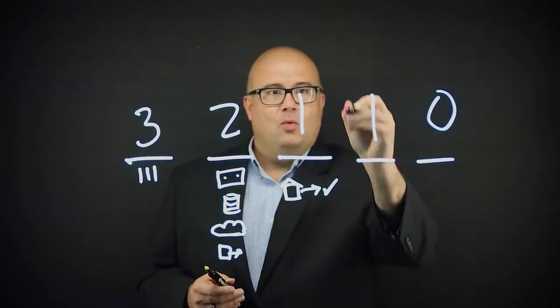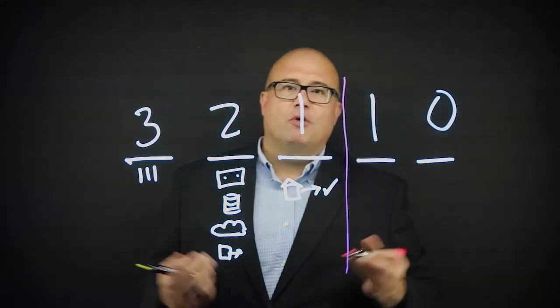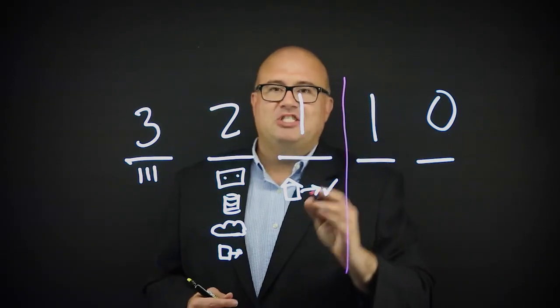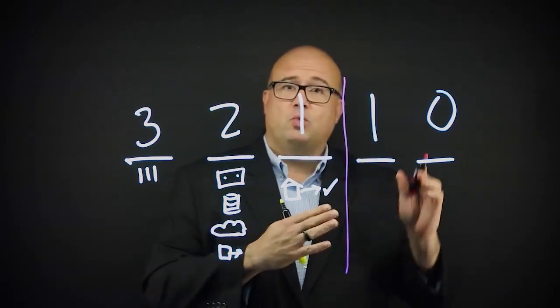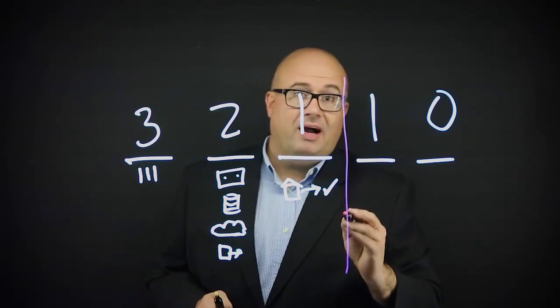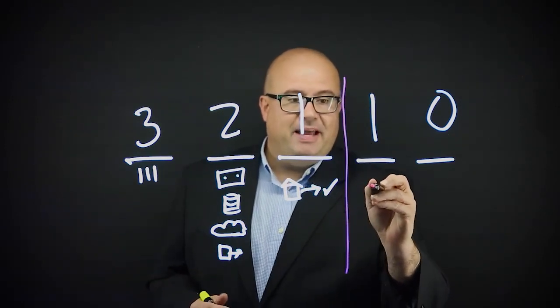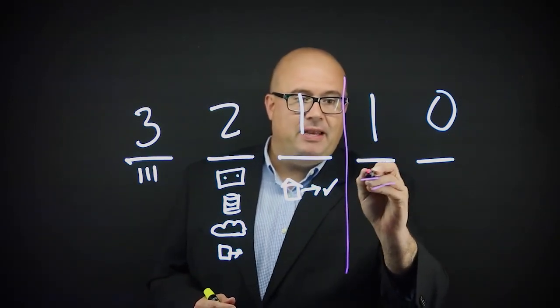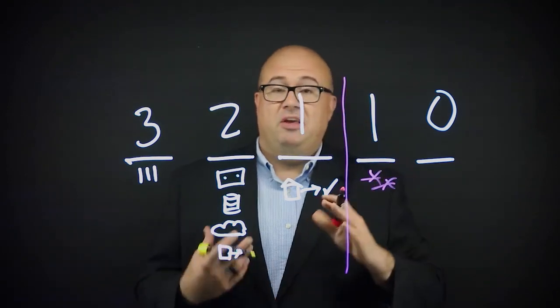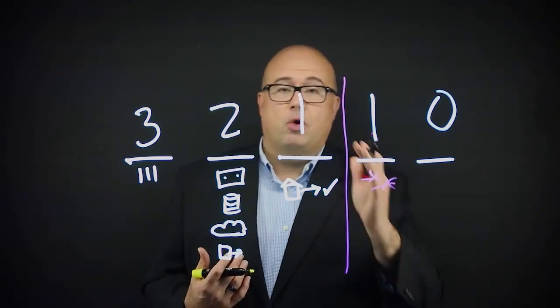But what about today? There's more threats on your data. I'd like to challenge everyone to do the 3-2-1-1-0 rule, which would include one or more copies of data that are marked as immutable. That means you cannot change it. It's either air-gapped, offline, or immutable, something that's really resilient to the threats that we have today.